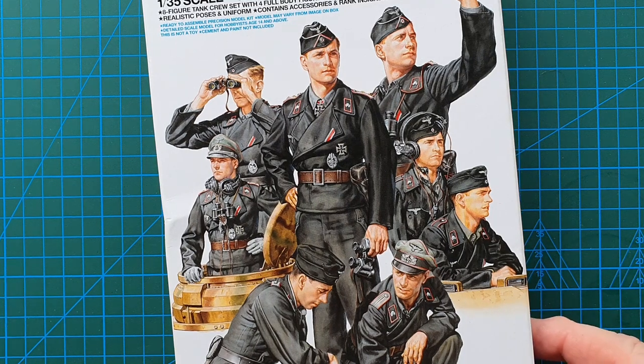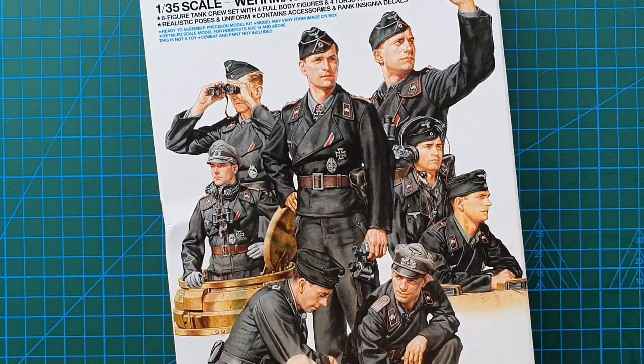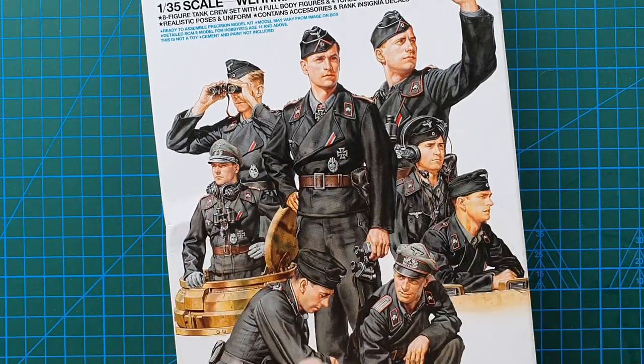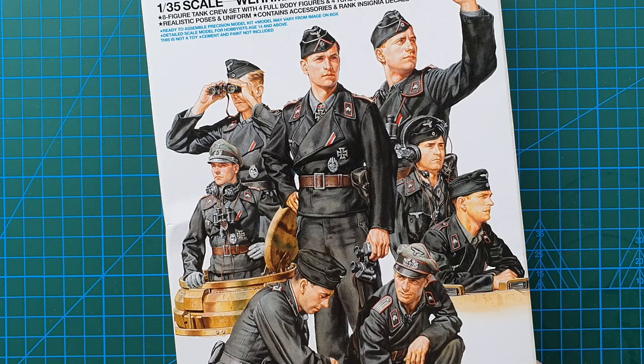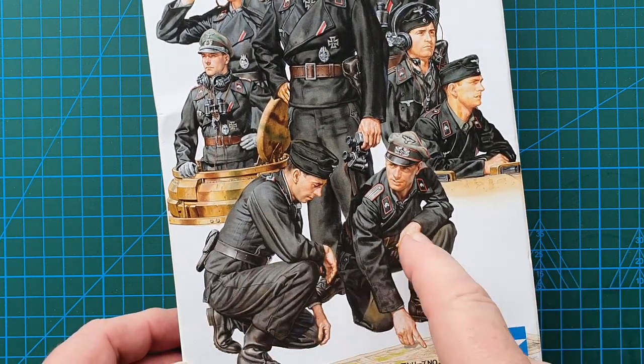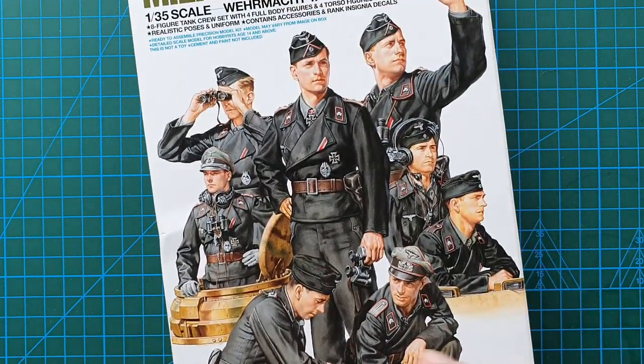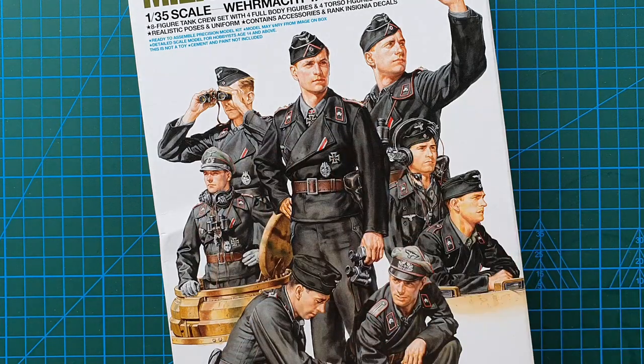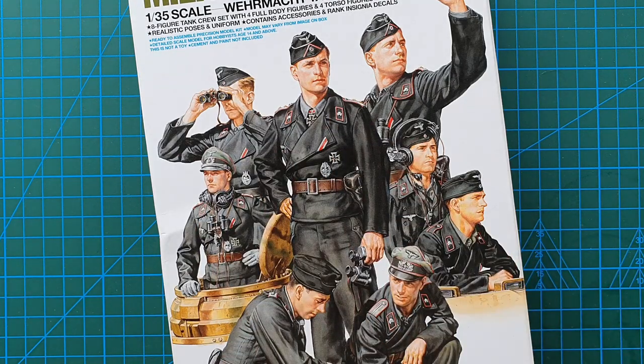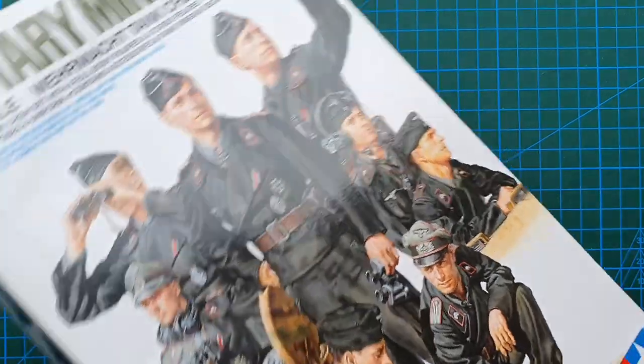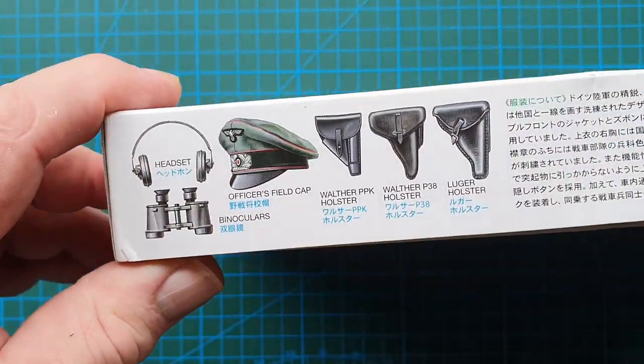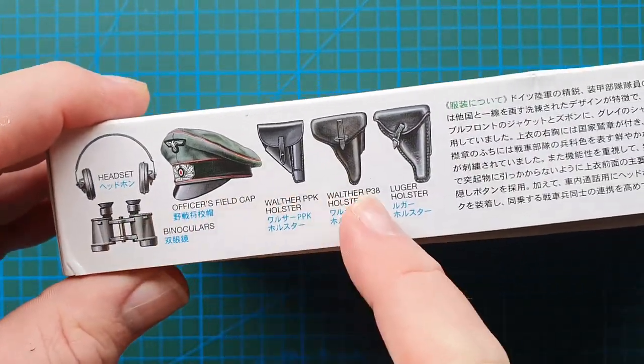There's your standard Tamiya box art—really nice detailing, really good faces. I love their box art. You do get two kneeling figures, two standing figures, and as I said, four half-size figures. Let's have a look at the rest of the box.